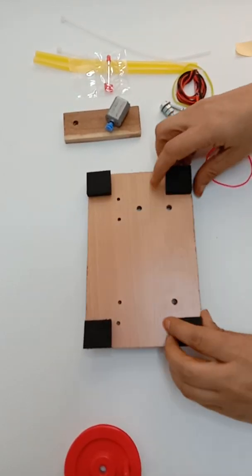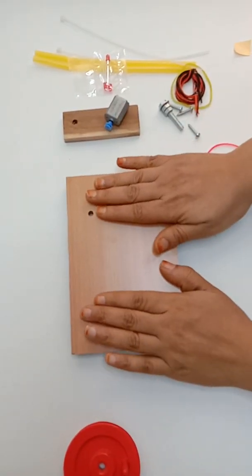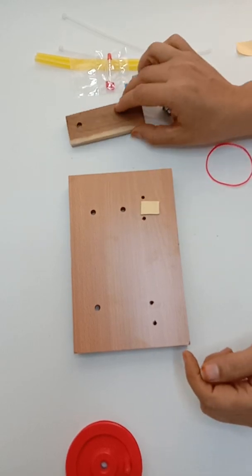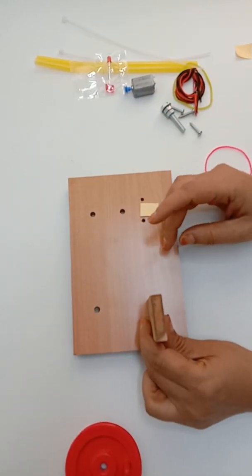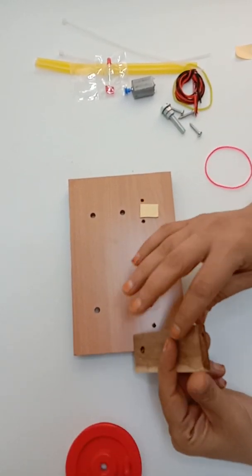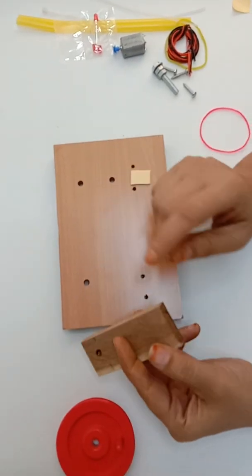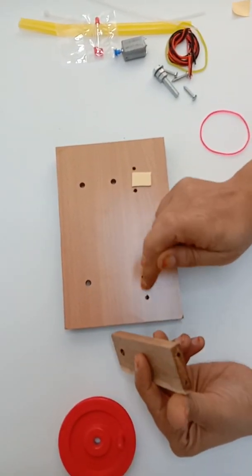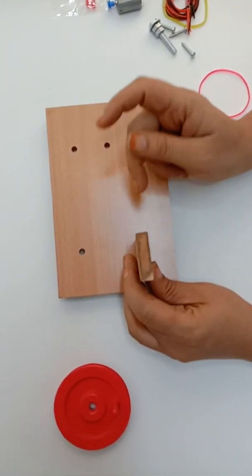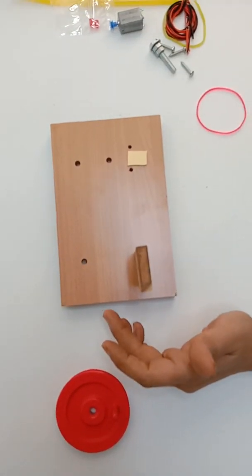So your base is ready. Second step is that you will be fixing this wooden batten with these two holes. You can see there are two holes at the bottom of the batten and there are two holes on the base, and these two holes should match.